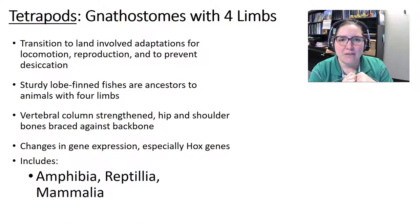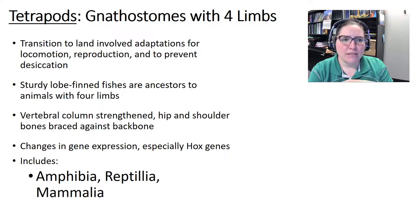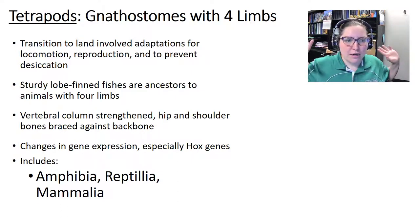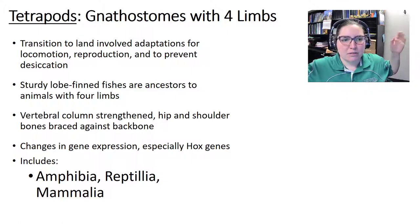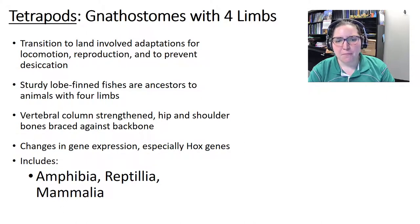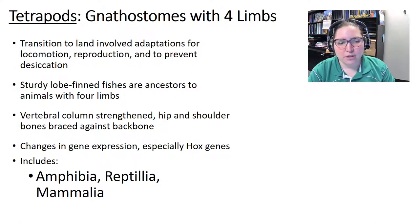Tetrapods — 'tetra' meaning four, 'pod' meaning foot — are gnathostomes with four limbs that typically live on land. The transition to land required adaptations for locomotion, reproduction, and preventing drying out. Ancestral lobe-finned fishes are thought to share a common ancestor with animals that have forelimbs. The vertebral column had to strengthen and hip and shoulder bones had to brace against the backbone, driven by changes in Hox gene expression. This includes amphibians, reptiles, and mammals.